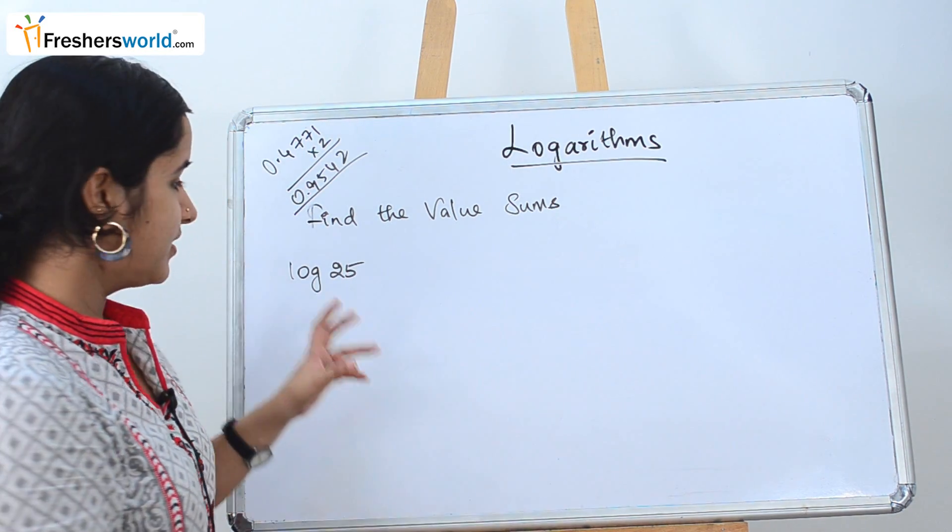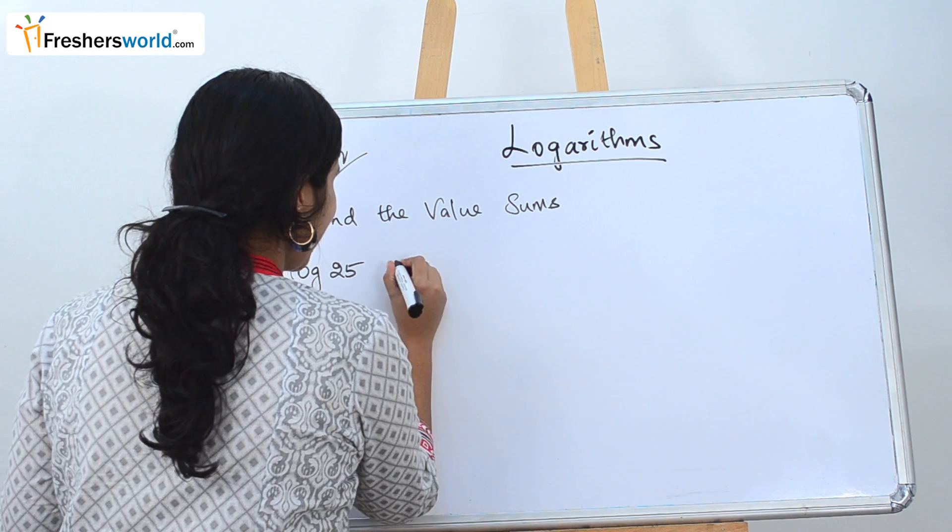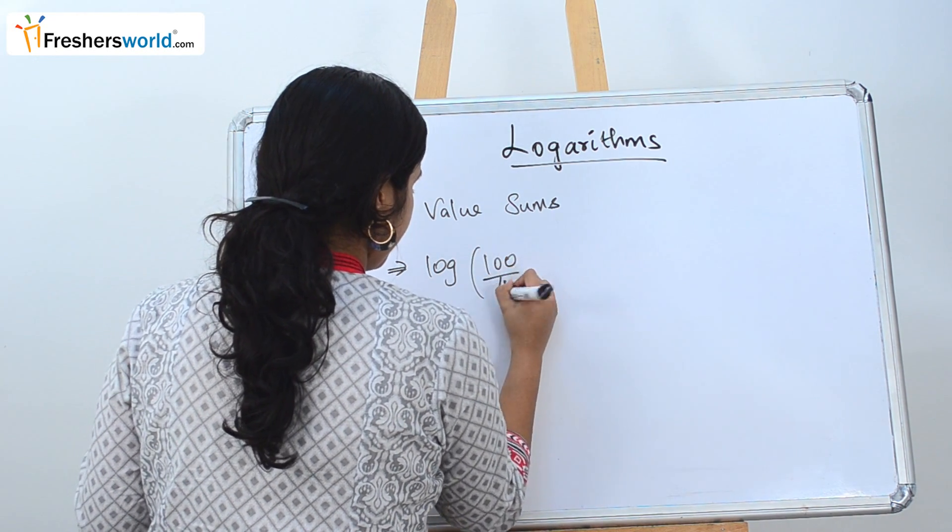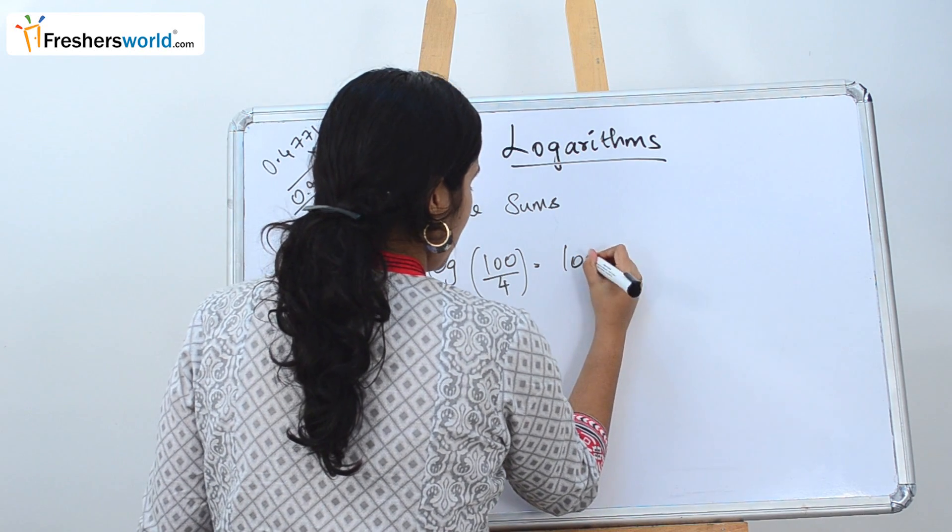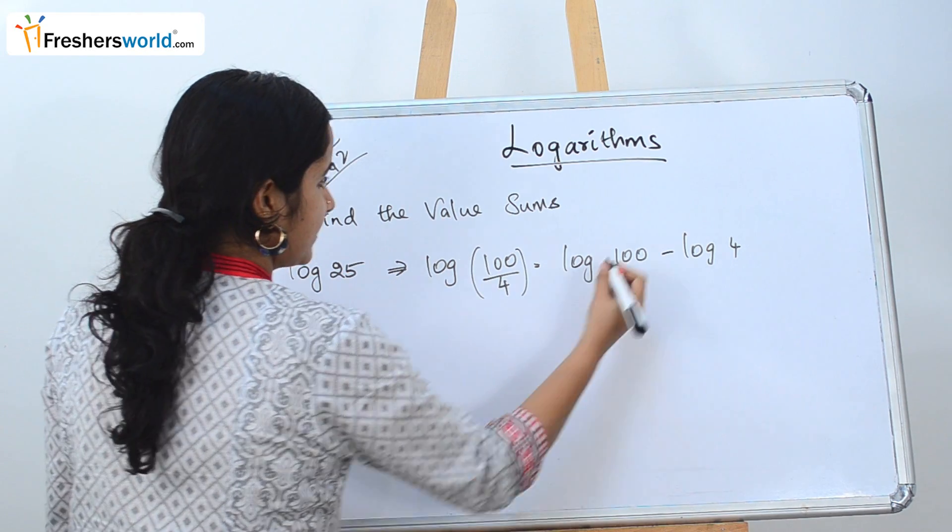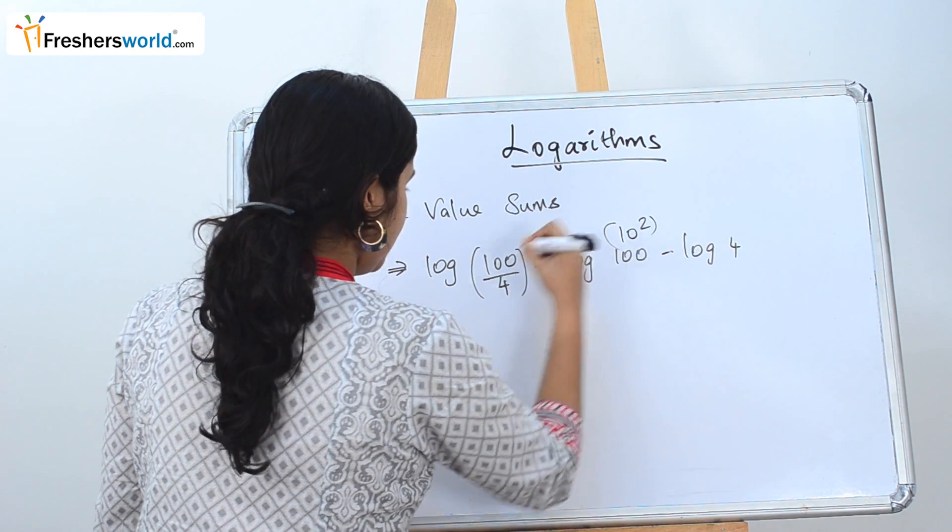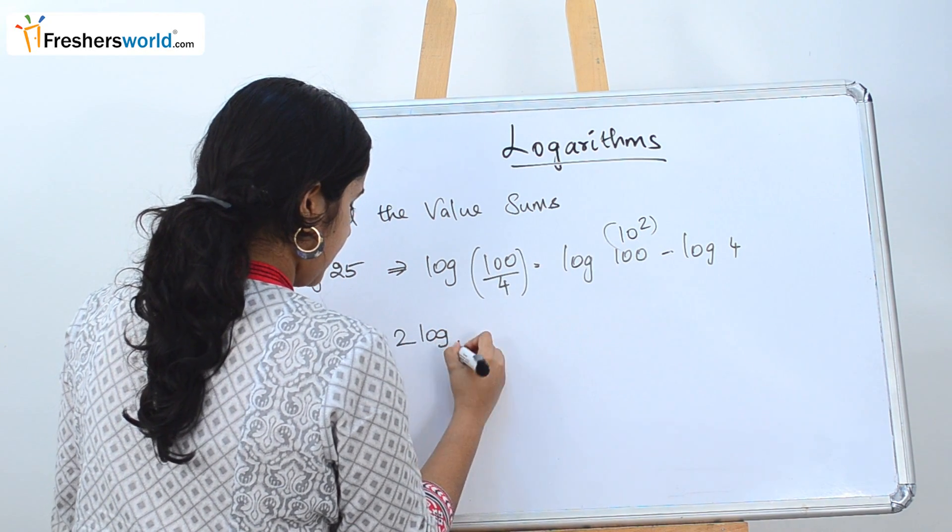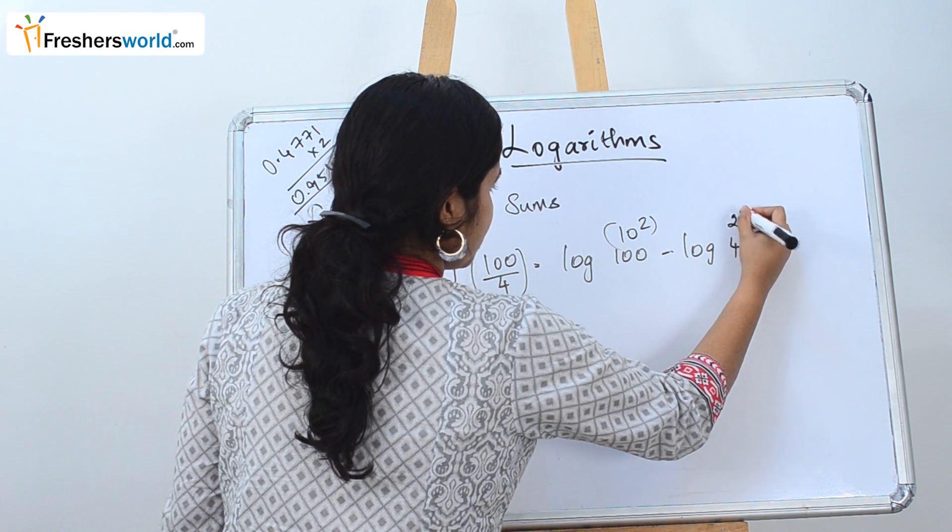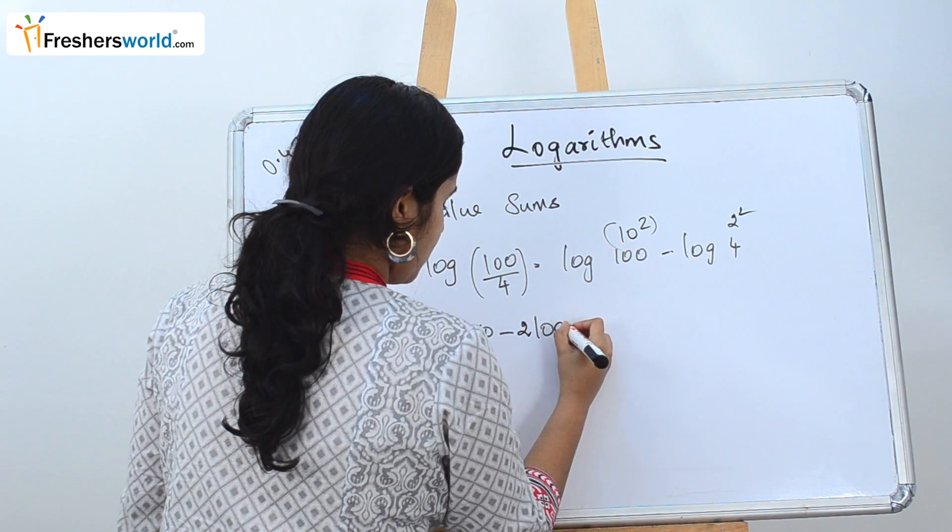Let's go to the next sum. The next question that they have given is log 25. So how can this be rewritten? Log 100 by 4, which can be rewritten as log 100 minus log 4. This can be written as 10 squared, and 2 log 10 base 10 minus this can be written as 2 squared, so 2 log 2.